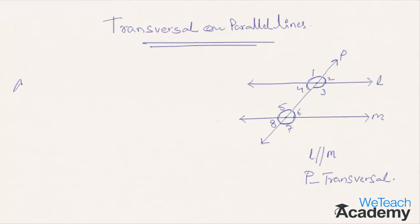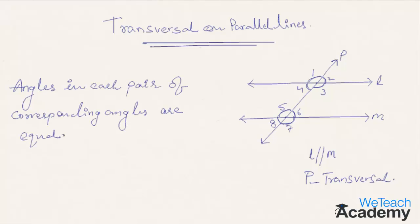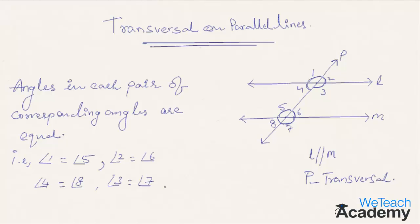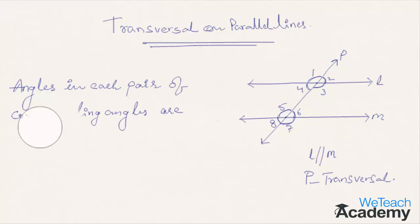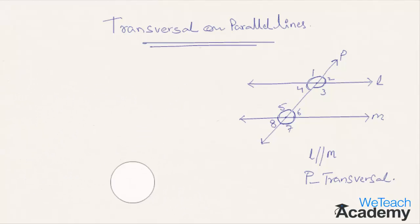Hence, when parallel lines are intersected by a transversal, the angles in each pair of corresponding angles are equal: angle one equals angle five, angle two equals angle six, angle four equals angle eight, and angle three equals angle seven.